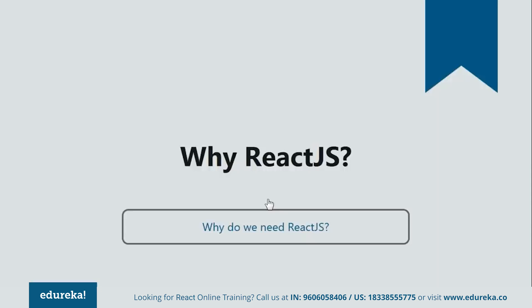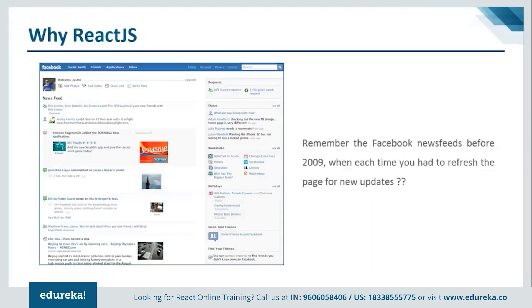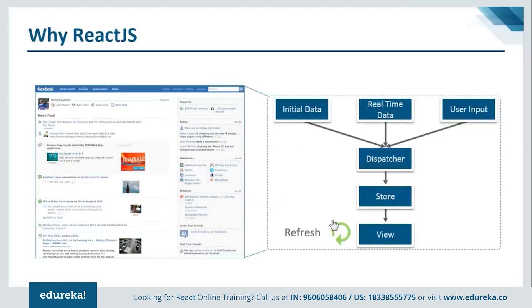Some of you might ask why React.js when there are so many other frameworks available. To understand this, let's take Facebook as an example. Let's go back to 2009-2010 when Facebook looked somewhat like this. During this time, you had to repeatedly reload the page for new updates. At the back end, Facebook was using the traditional data flow where data came from various sources like initial data, real-time data, or user input. This data was passed to the dispatcher, then to the store, and ultimately came to the view.